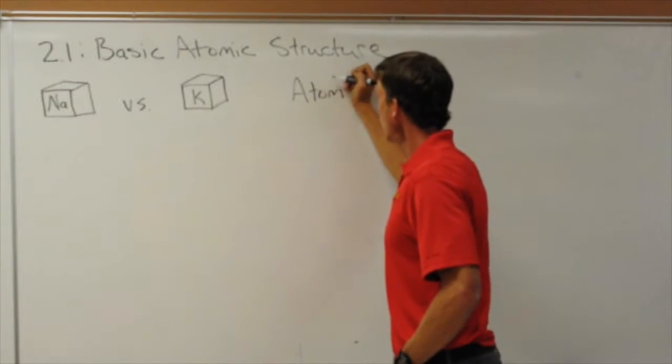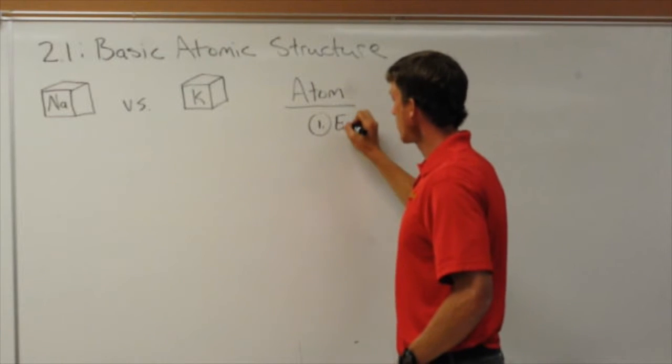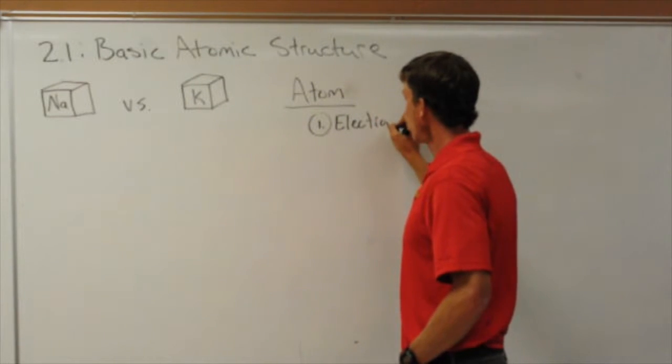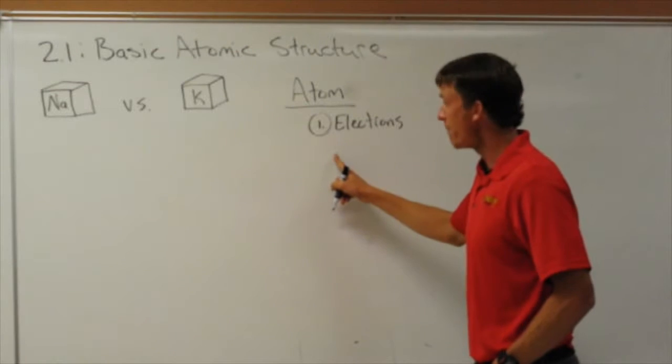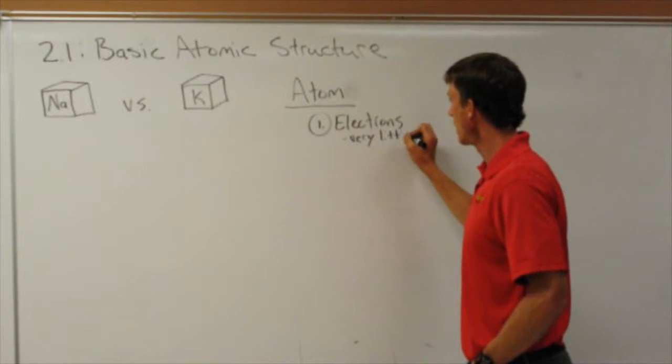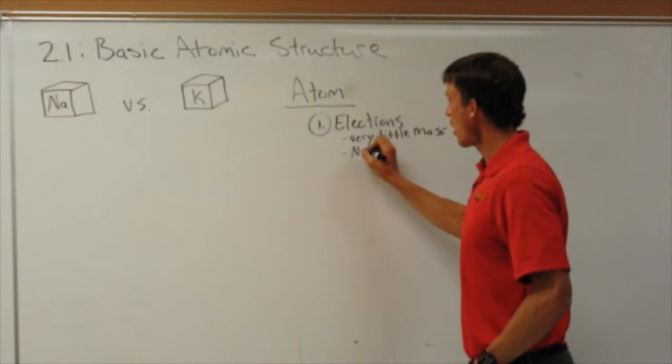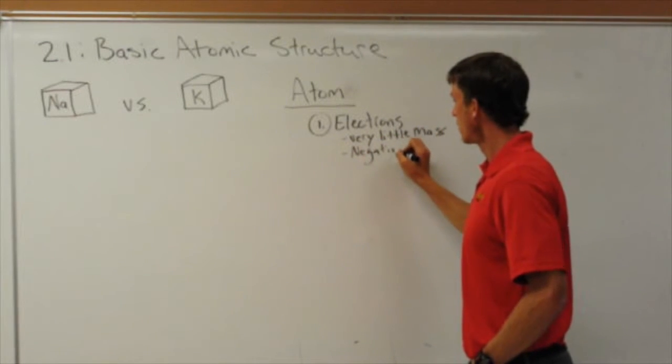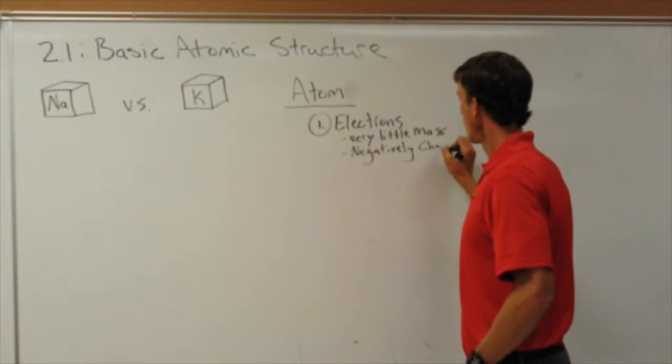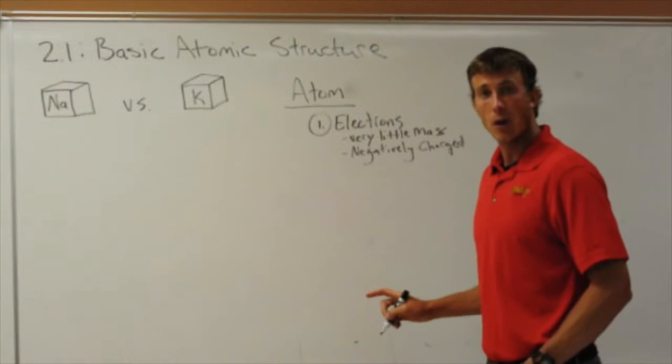So there are three basic parts of an atom. So one of them are electrons. Electrons have very little mass, very little mass, and they're negatively charged. They do not account for much of the mass.